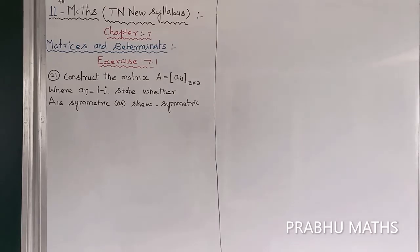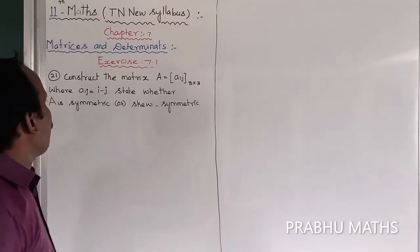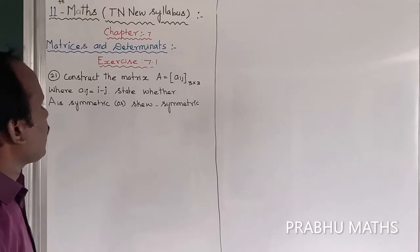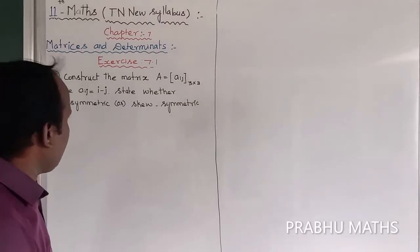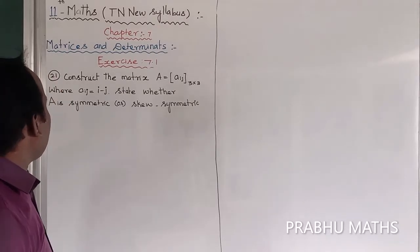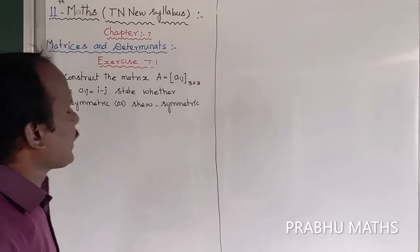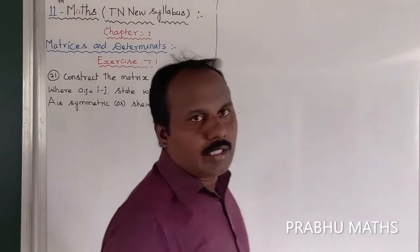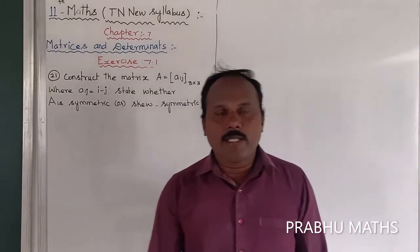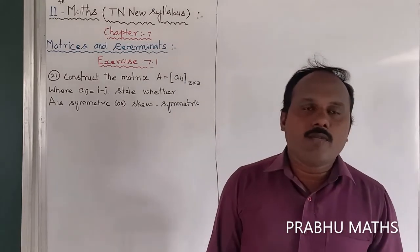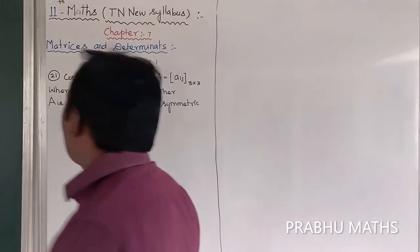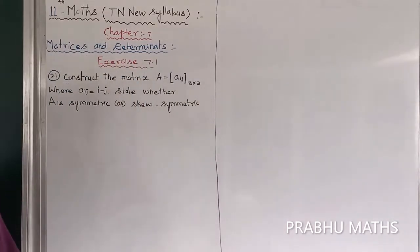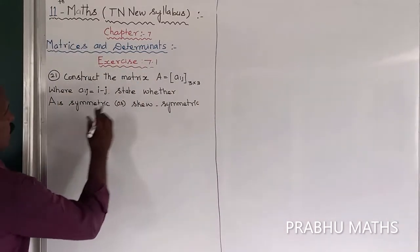Construct the matrix A equal to A(i,j), a 3 by 3 matrix, where A(i,j) is equal to i minus j. State whether A is symmetric or skew symmetric. Symmetric means A transpose is equal to A. Skew symmetric means A transpose is equal to minus A. So let us find out whether A is symmetric or skew symmetric.